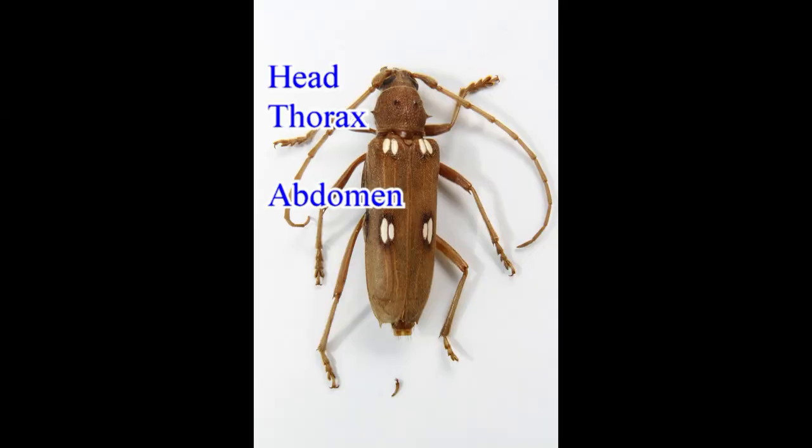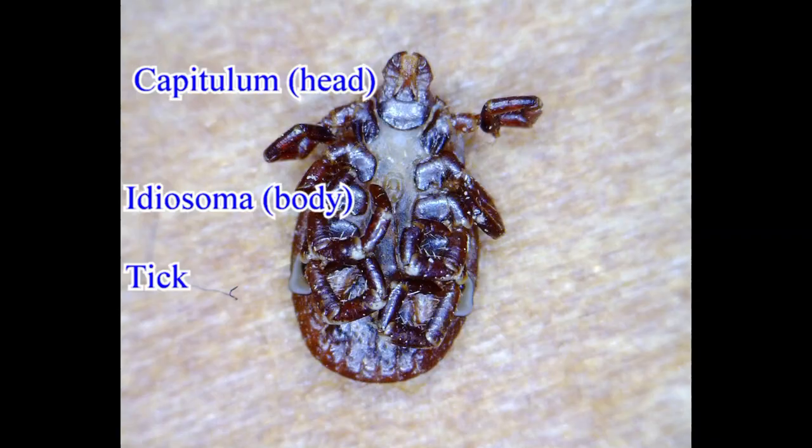Adult insect bodies are divided into three regions: head, thorax, and abdomen. They have six legs attached to the thorax, while spiders and mites have eight legs. Lobsters have ten, millipedes have many legs. Mites, spiders, and ticks have eight legs and only two body regions, as the head and thorax are combined, and they do not have antennae.